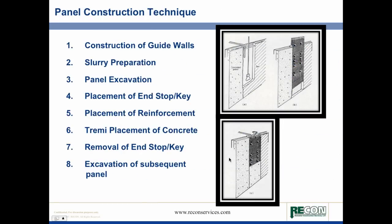The second construction technique after the slurry trenching method is the panel construction technique. These are generally used for structural walls, or if there's a significant elevation change, or if you have ground conditions that are susceptible to failure because of surcharges. The panel construction technique generally uses a guide wall system to guide the excavation, and you prepare the slurry first.